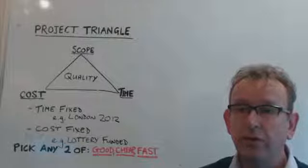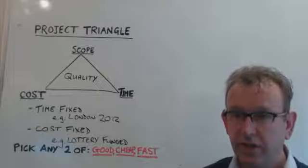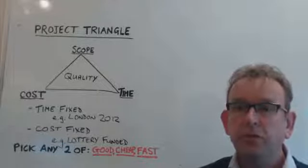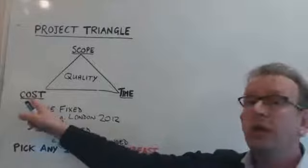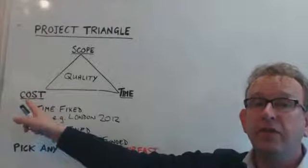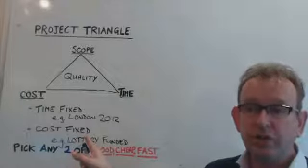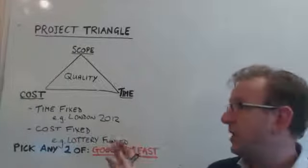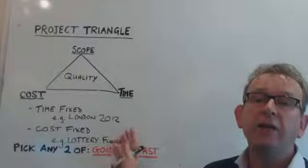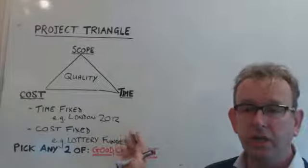So these three elements are the three primary constraints which every project faces. It's important to recognize that on every project at least one of these sides is fixed. For example, many projects are fixed by cost — such as lottery-funded projects, where the project is given a grant and must deliver within that budget no matter what happens.